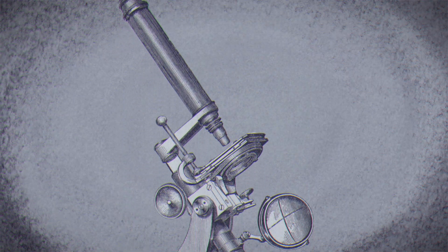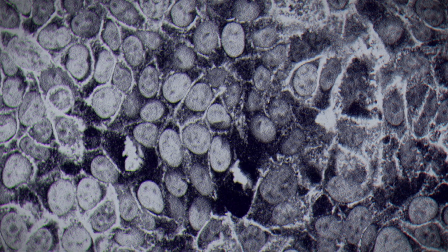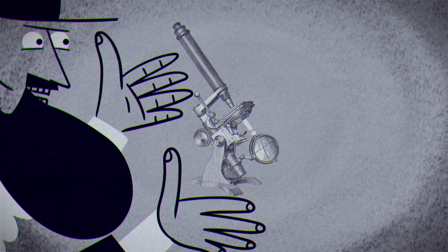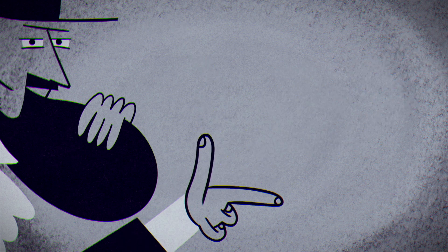60 years before reticular theory was born, developments in microscope technology revealed cells to be the building blocks of organic tissue. This finding was revolutionary, but early microscopes struggled to provide additional details.